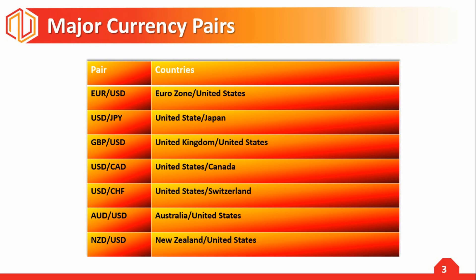The EUR/USD pair is the most traded pair with a daily trade volume of nearly 30% of the entire forex market. To explain these pairs quickly: EUR/USD is between the eurozone and the United States; USD/JPY is the US with Japan; GBP/USD is the UK with the US; USD/CAD is the US with Canada; USD/CHF is the US with Switzerland; AUD/USD is Australia against the United States; and NZD/USD is New Zealand against the United States. Generally speaking, the currency on the left is the stronger one.